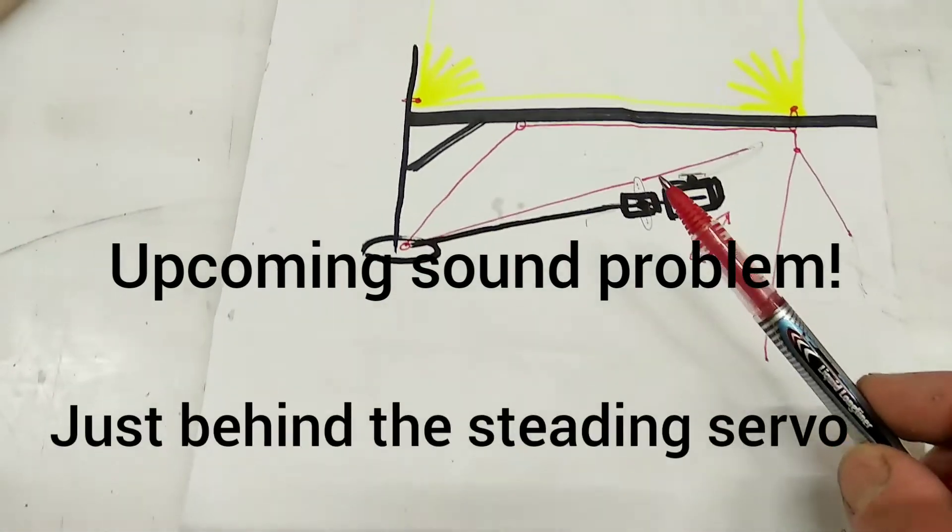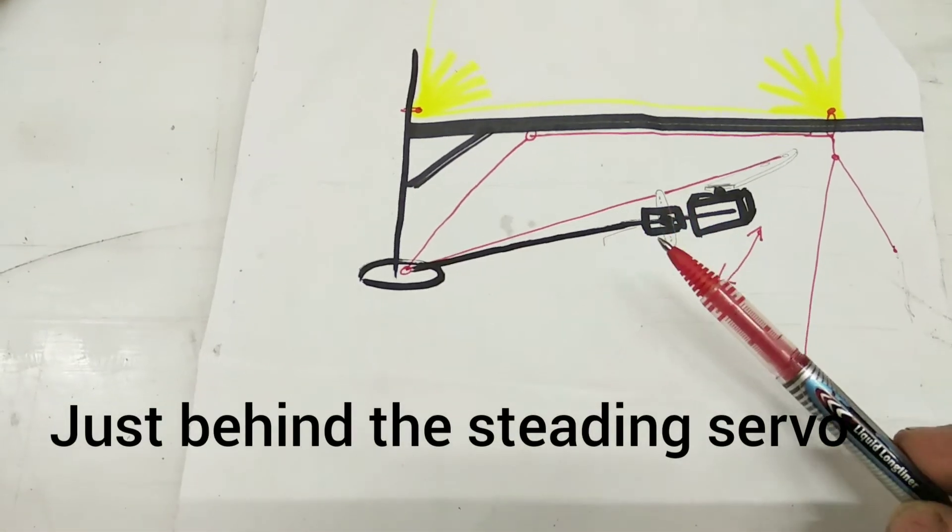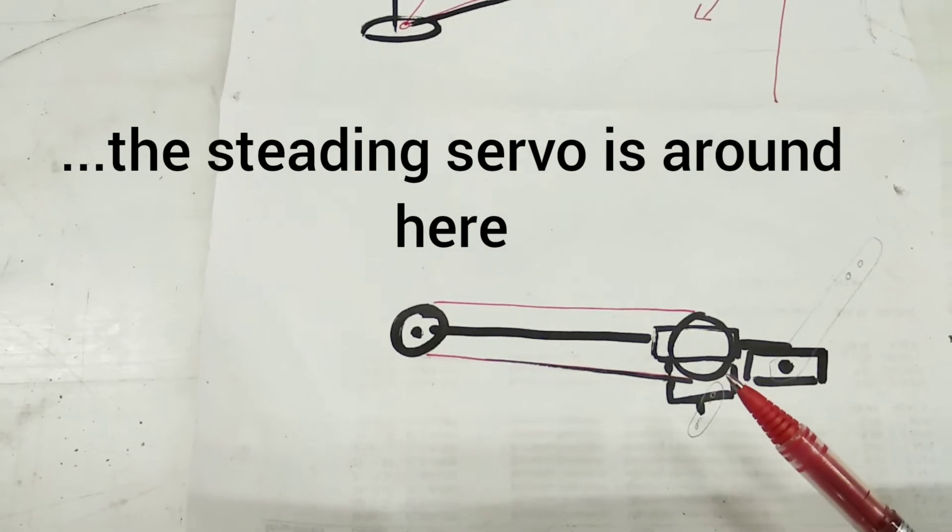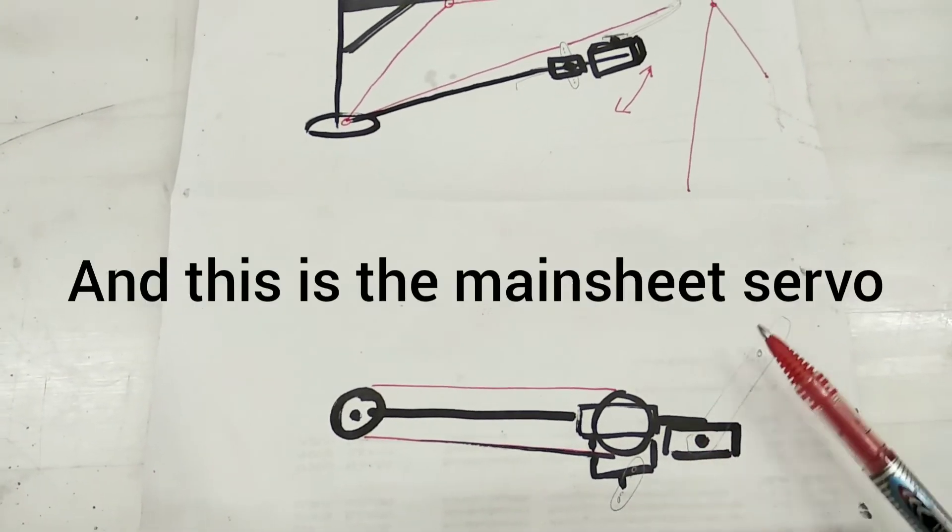So, we have here a winch servo, which will sit just behind the steering servo. And the steering servo is going to be made by a steering servo.